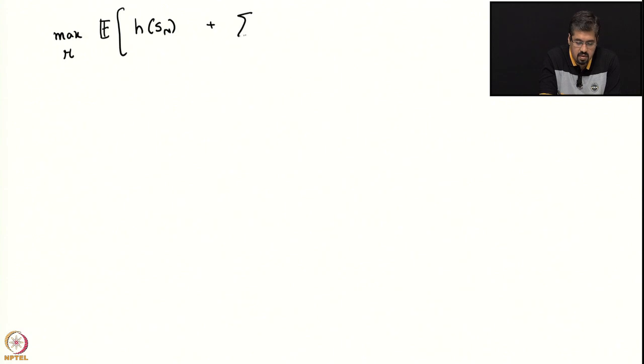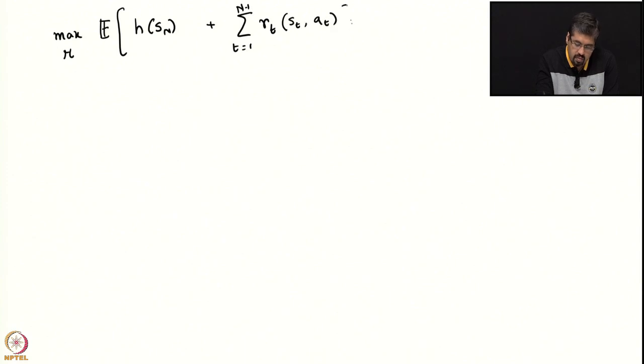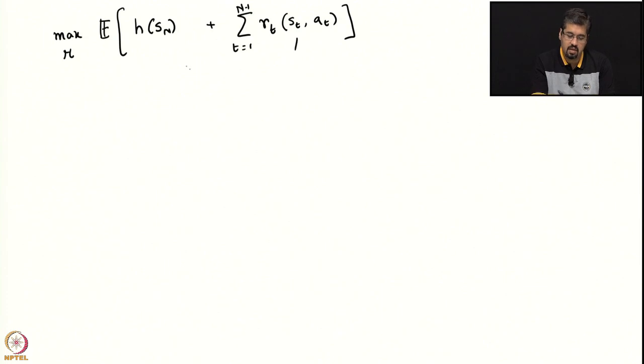What we will do is solve the secretary problem using Bellman's dynamic programming algorithm. In order to do that, we need to first write out what the total cost or the total reward in this particular problem is. Remember what we are trying to do is maximize over all policies the expectation of H of S_n plus the sum from t equals 1 to n minus 1 of r_t of s_t comma a_t, where s_t is the state of the synthetic control Markov chain that we have created. So s_t and S_n belong to S, which is S-dash union delta.